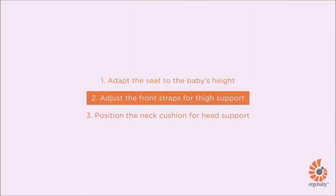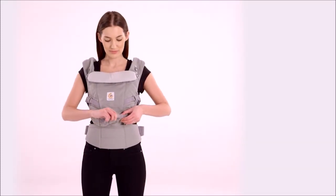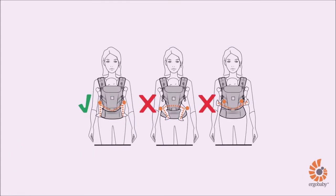Second, adjust the front straps to ensure your baby's thighs are fully supported. You can further fine-tune the seat at each stage with the two front straps to ensure baby is ergonomically seated in an M-shaped position, supported from knee to knee.